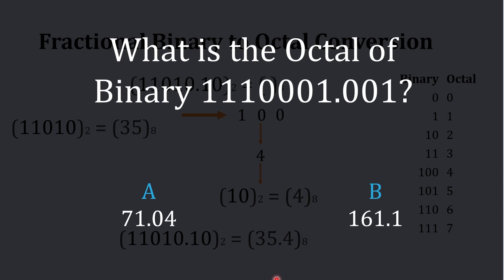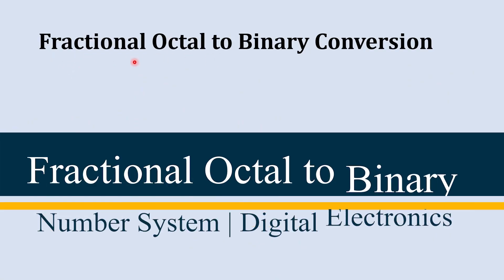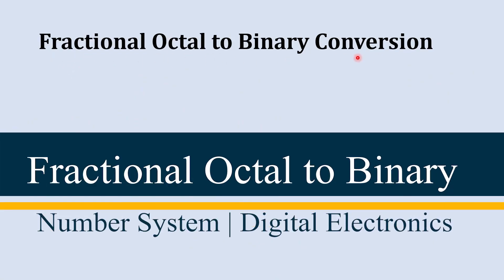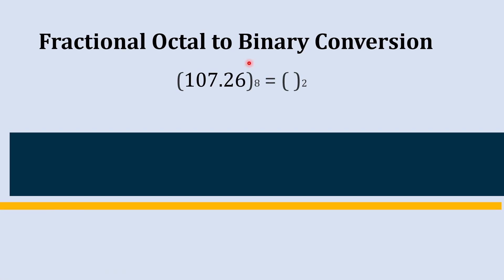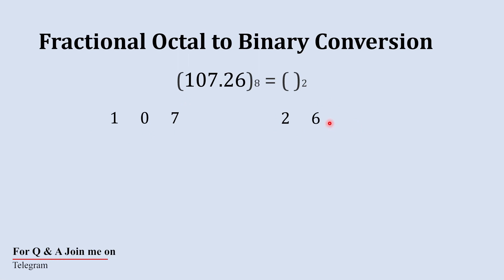Now it's time to convert a fractional octal number into binary. First, we are going to write the fractional octal number, which is 107.26. In the first half we are going to convert 107 into binary, and then we will convert .26.